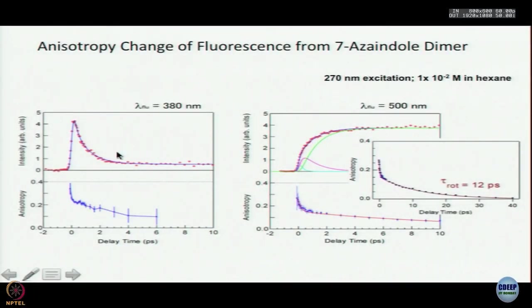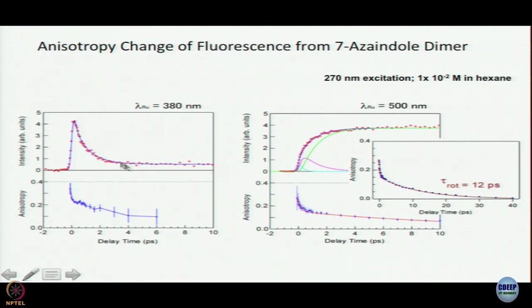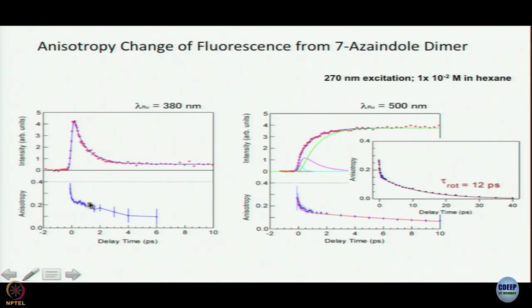Let me show you the fluorescence anisotropy data of Takeuchi and Tahara. This is the fluorescence decay excited at 270 nanometer — the benzenoid band — observed at 380 nanometer emission: a decay you see here. At 500 nanometer emission, you see a rise followed by a very slow decay. Now here is the time evolution of anisotropy: at 500 nanometer you see a first component, and the time evolution of anisotropy is slower, associated with 12 picoseconds.